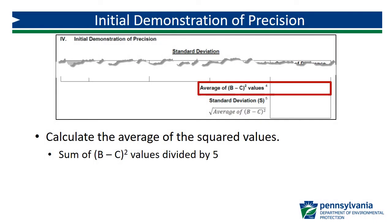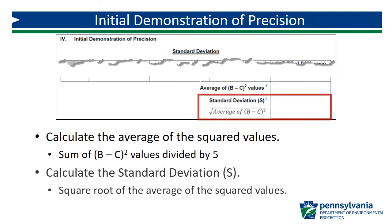Calculate the average of these squared values by dividing their sum by 5. Then determine the standard deviation of the five replicates by taking the square root of this average value.